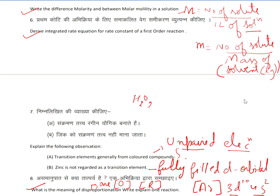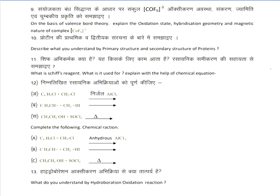The example of a disproportionation reaction is hydrogen peroxide (H₂O₂). H₂O₂ decomposes to give H₂O and O₂, where one part is oxidized and another is reduced. Next question: on the basis of valence bond theory (VBT) from coordination compounds, explain the oxidation state, hybridization, geometry, and magnetic nature of the complex [CoF₆]³⁻.